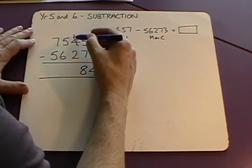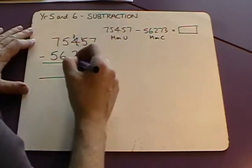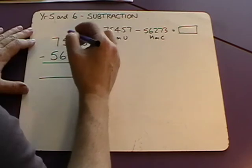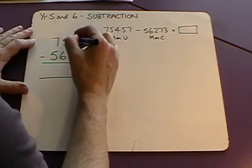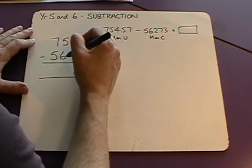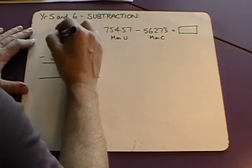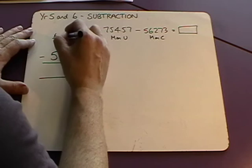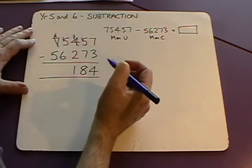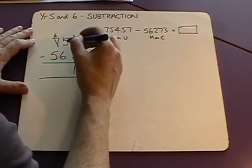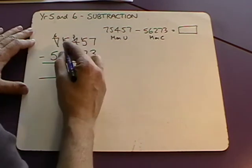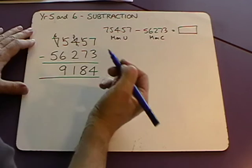Hundreds column. We can do this. Three hundred subtracts two hundred is one hundred. And then with the thousands column we don't have enough thousands. We've only got five thousand. We need to take away six thousand. So we're going to need to borrow from the ten thousands column. That leaves us with six and place our one there. Leaving us with fifteen one thousands. Take away six thousands. And that leaves us with nine thousand.